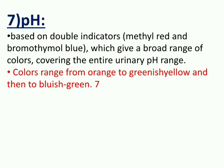pH — the test is based upon a double indicator system, that is methyl red and bromothymol blue, which covers a broad range of colors covering the entire urinary pH range. The color ranges from orange to greenish yellow and then to bluish green.